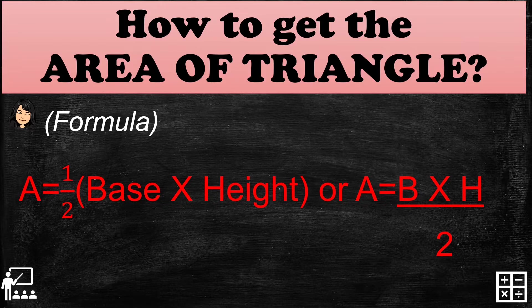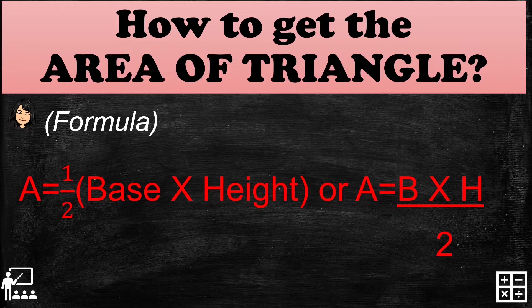If you remember, base times height is the formula for the parallelogram. Earlier, I presented two triangles which together equal a parallelogram, and we saw that a parallelogram can be divided into two triangles. So in this formula, we take the formula of the parallelogram and divide it by two to get the area of the triangle.